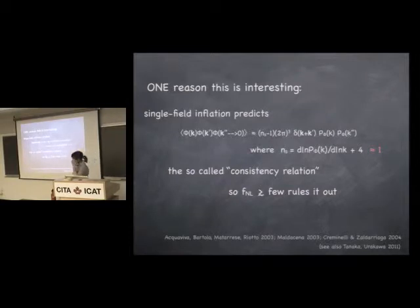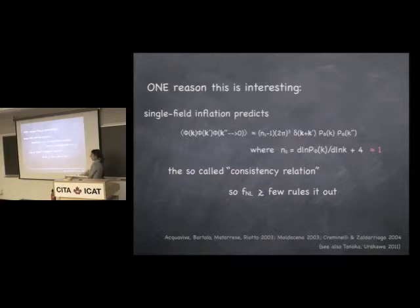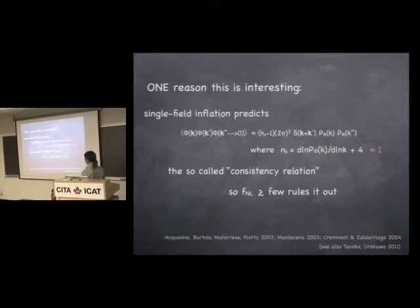One reason this is interesting is that there's a theorem: if you have single-field inflation, this parameter f_NL — which comes from measuring the bispectrum in the squeezed limit — has to vanish. So a detection of f_NL greater than a few, where you're confident there aren't contributions from other secondary non-Gaussianities, would rule out all models of single-field inflation. This was first shown in a paper by Maldacena, and a similar paper by Acquaviva, and then later generalized by Creminelli and Zaldarriaga.